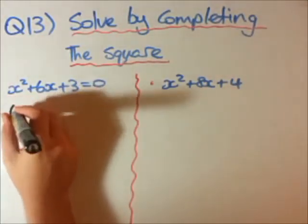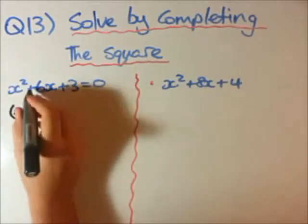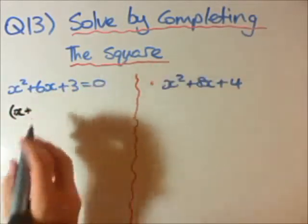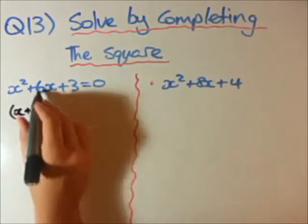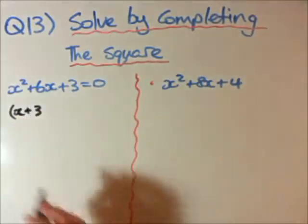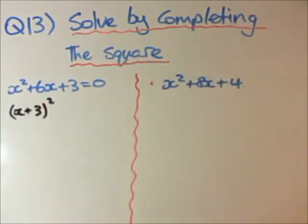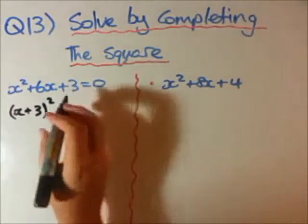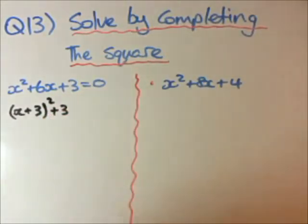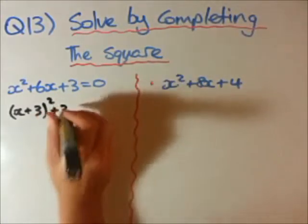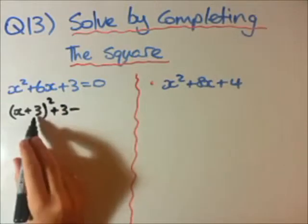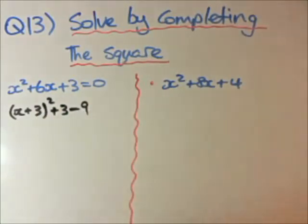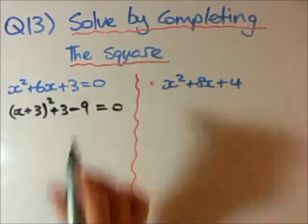Bracket, whatever this letter is — x — always keep the sign, plus, and always half of this number. Half of 6 is 3. Close bracket, square — that's the hard part done. Now whatever's left over here, there's plus 3, and the last step is always minus this number squared — 3 squared is just 9. And make that still equal to 0.